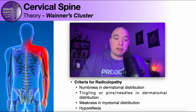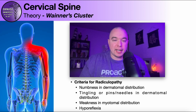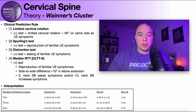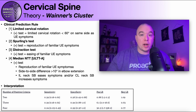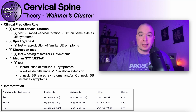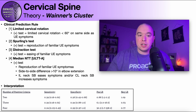Even with all that good information, it's not enough — we have to test to see whether the person has a radiculopathy, and that leads us into Wainer's cluster. There are four tests: number one, limited cervical rotation; number two, Spurling's test; number three, the distraction test; and number four, the median nerve tension test, also known as ULTTA or upper limb tension test A. Now let's talk about the interpretation of the cluster — based on how many are positive or negative, what can we say about the individual in front of us?